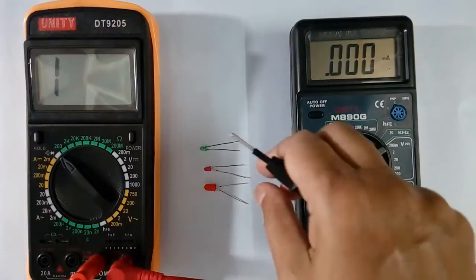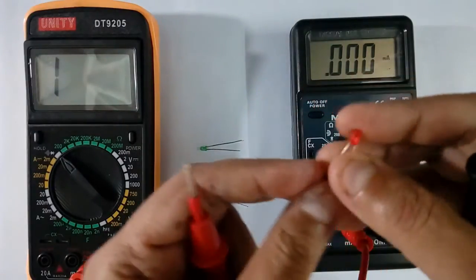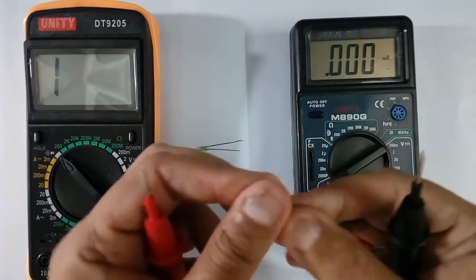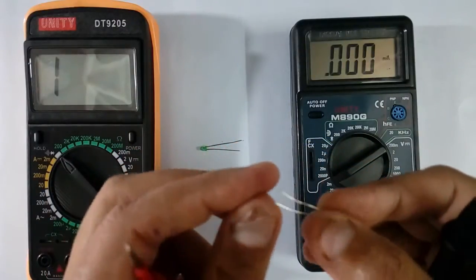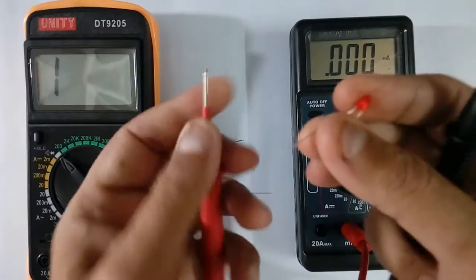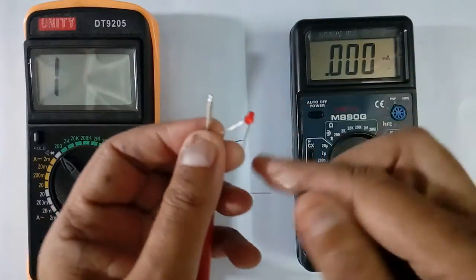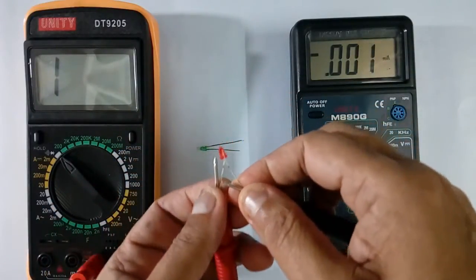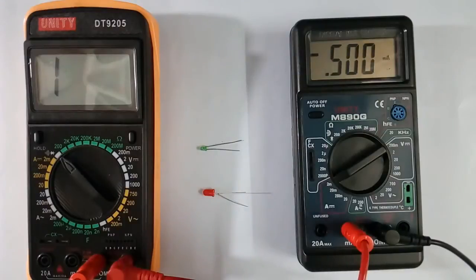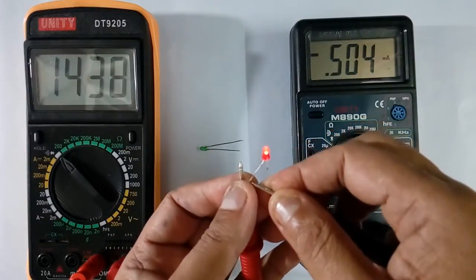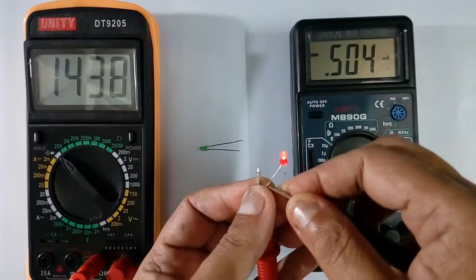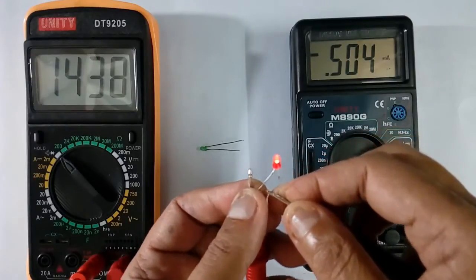Now I will take LED. LED has 2 terminals. One is longer, one is shorter. Longer is anode. The longer one will connect with red wire. This will connect with red wire. This LED is glowing. Forward drop is 1.438 volt and current is 0.5 mA.